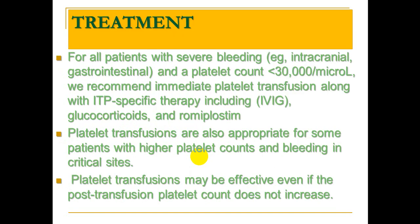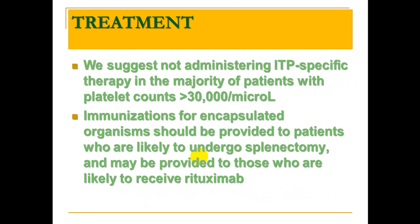Per guidelines, patients with platelet count below 30 need treatment. Above 30 with no clinical bleeding, treatment is not needed. Drug of choice is steroids first, IV immunoglobulin second, and platelet transfusion as needed. Non-specific treatment or no treatment is suggested for patients with platelet count more than 30 without obvious clinical bleeding.